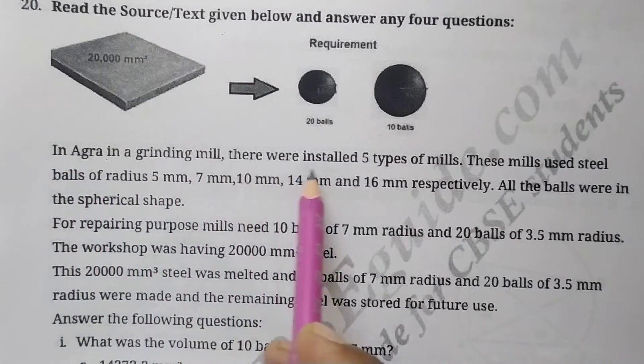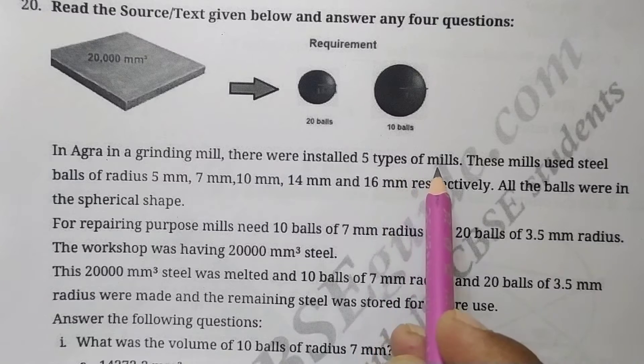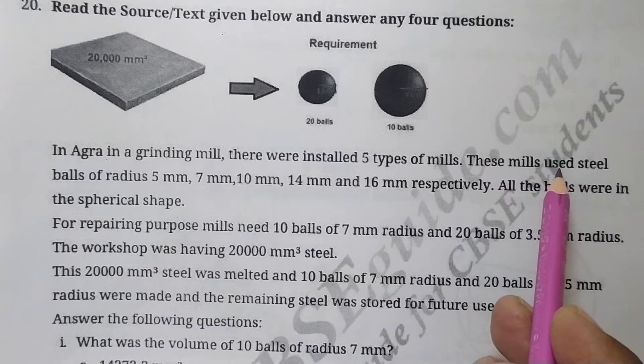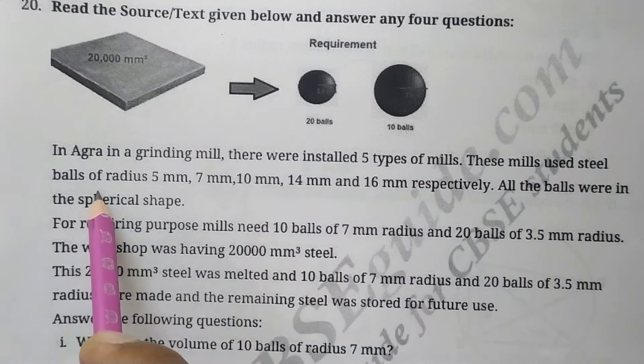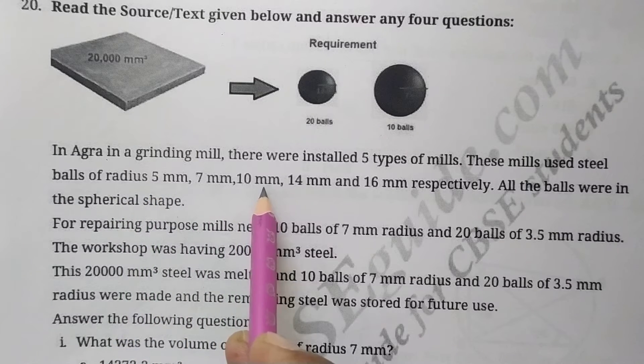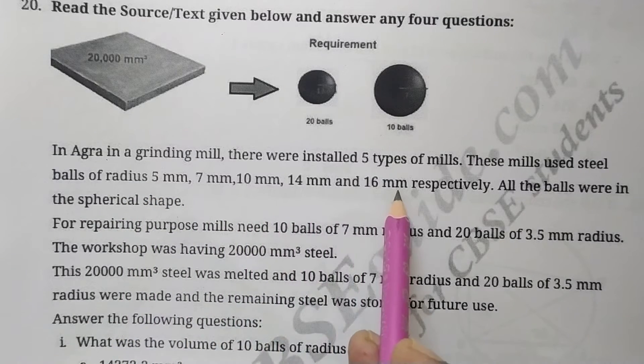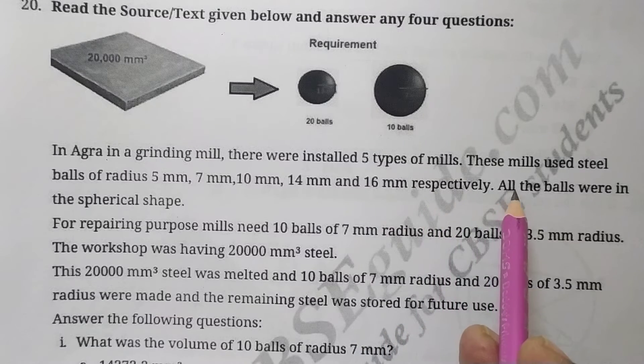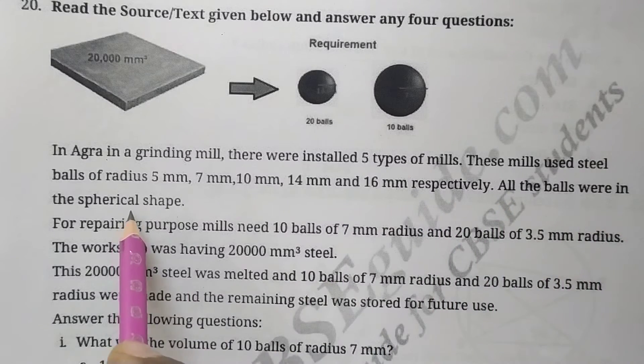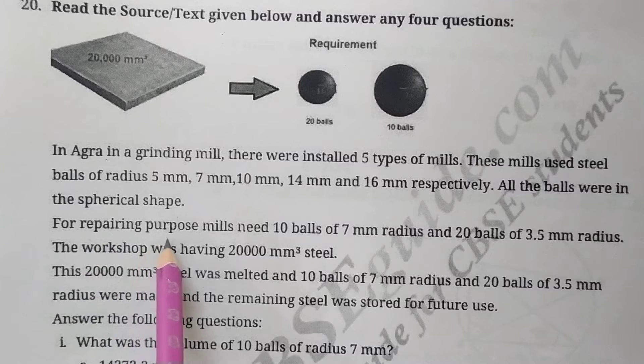In Agra, in a grinding mill, there were installed five types of mills. These mills used steel balls of radius 5 millimeter, 7 millimeter, 10 millimeter, 14 millimeter, and 16 millimeter respectively. All the balls were in spherical shape.